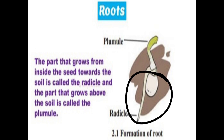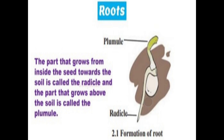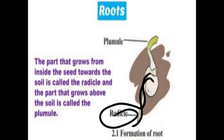The part that grows from inside the seed towards the soil is called the radicle. The lower-most part of the seed — jo seed ke neeche waale hisse se bahar hokar soil mein jata hai — that is called the radicle. So the lower-most part of the sprouting seed going into the soil is known as the radicle.